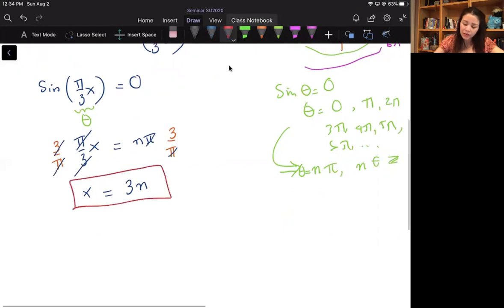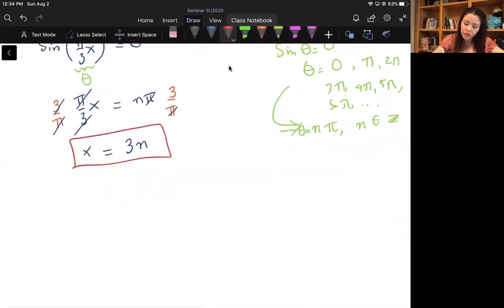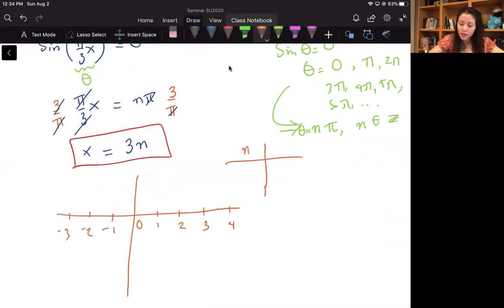Okay, so if you graph this, let me show you real quick. So here's 0, 1, 2, and 3, and then 4, etc., and then negative 1, negative 2, negative 3. And then you make a little chart, a little t-table. Here you have n, here you have x, which x equals 3n.